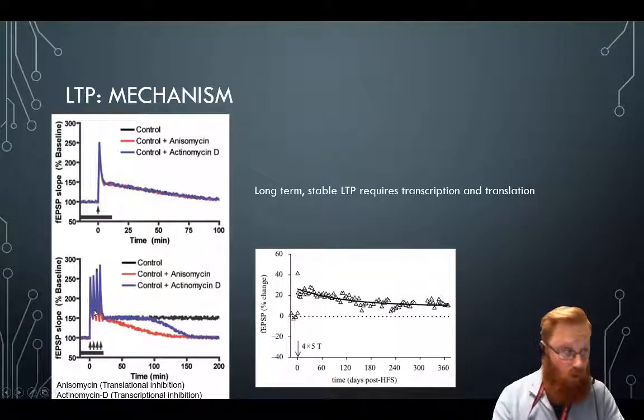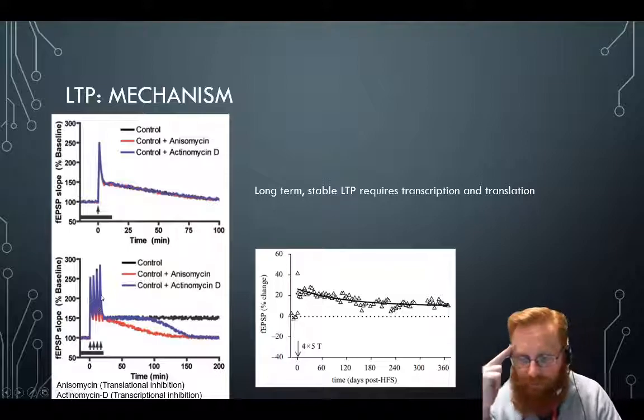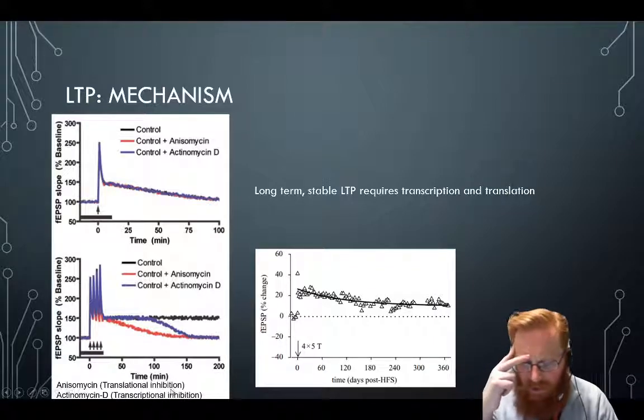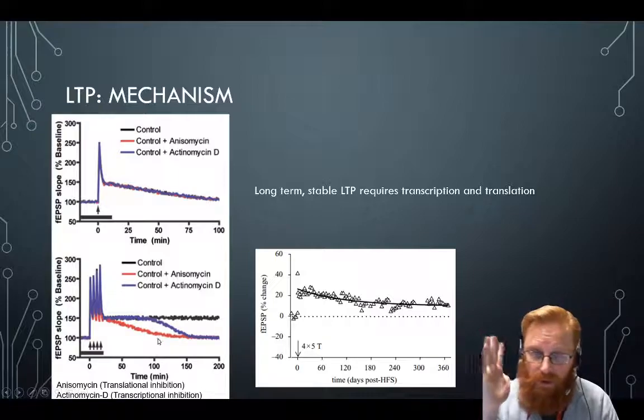But when they apply a very strong LTP protocol, they get LTP that goes up and stays up for 200 minutes, so three hours. But if they apply anisomycin, which blocks translation, so blocks the formation of new proteins, we turn this very strong and long-lasting LTP into that short form of LTP. Point is, if you block protein synthesis, then your LTP doesn't last very long.